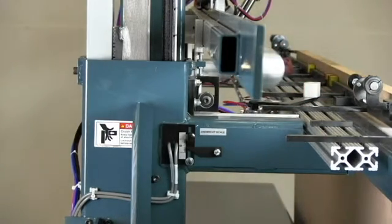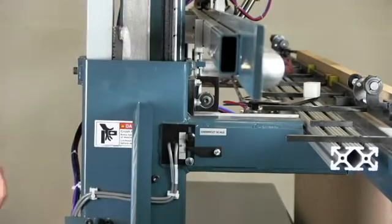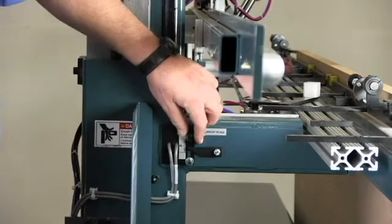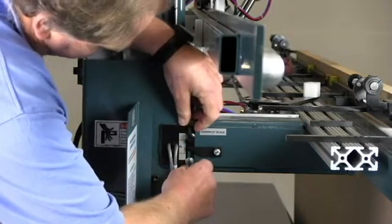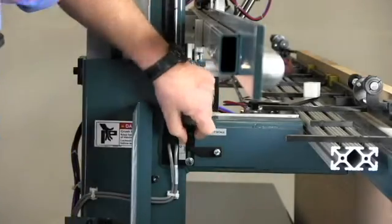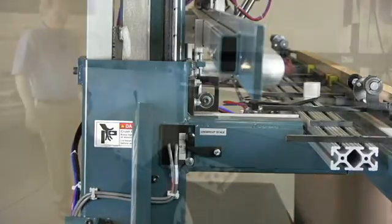With the undercut reference scale adjusted, the machine will auto-stop at all of the door dimensions at an eighth of an inch under. If I want to change my standard undercut to a sixteenth, I can loosen that up, move the scale to one-sixteenth under, and now all of the door stop dimensions will be at one-sixteenth under.